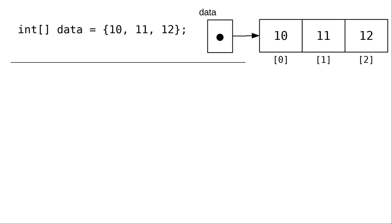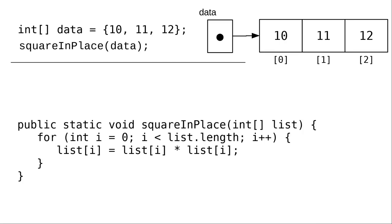How do we pass arrays to methods? Let's set up an array and call a method that will square each of the entries in that array.